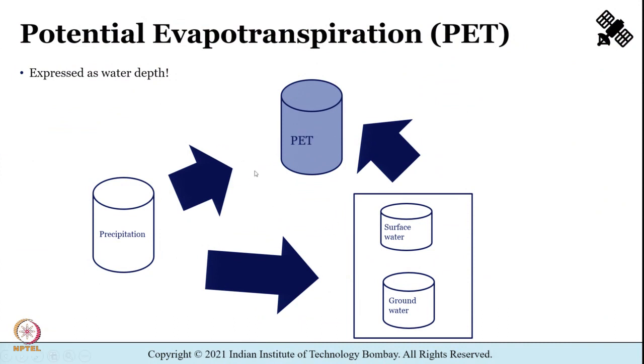To reiterate through this small drawing: PET takes water from the precipitation cylinder until the PET cylinder is full. If it is not full, it takes water from the rest of the model — surface water or ground water. Once PET is full, the remaining precipitation is available to flow to the rest of the model, meaning the PET requirement has been satisfied and the precipitation is free to reach the land surface.